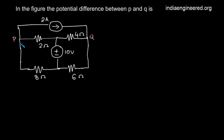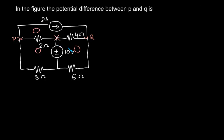We need the potential difference between P and Q. We have three loops, and we would need three equations to solve this using either loop or nodal analysis. We will instead try the superposition theorem and see how it can be solved easily. This question can be easily solved using superposition theorem and we will see that now.